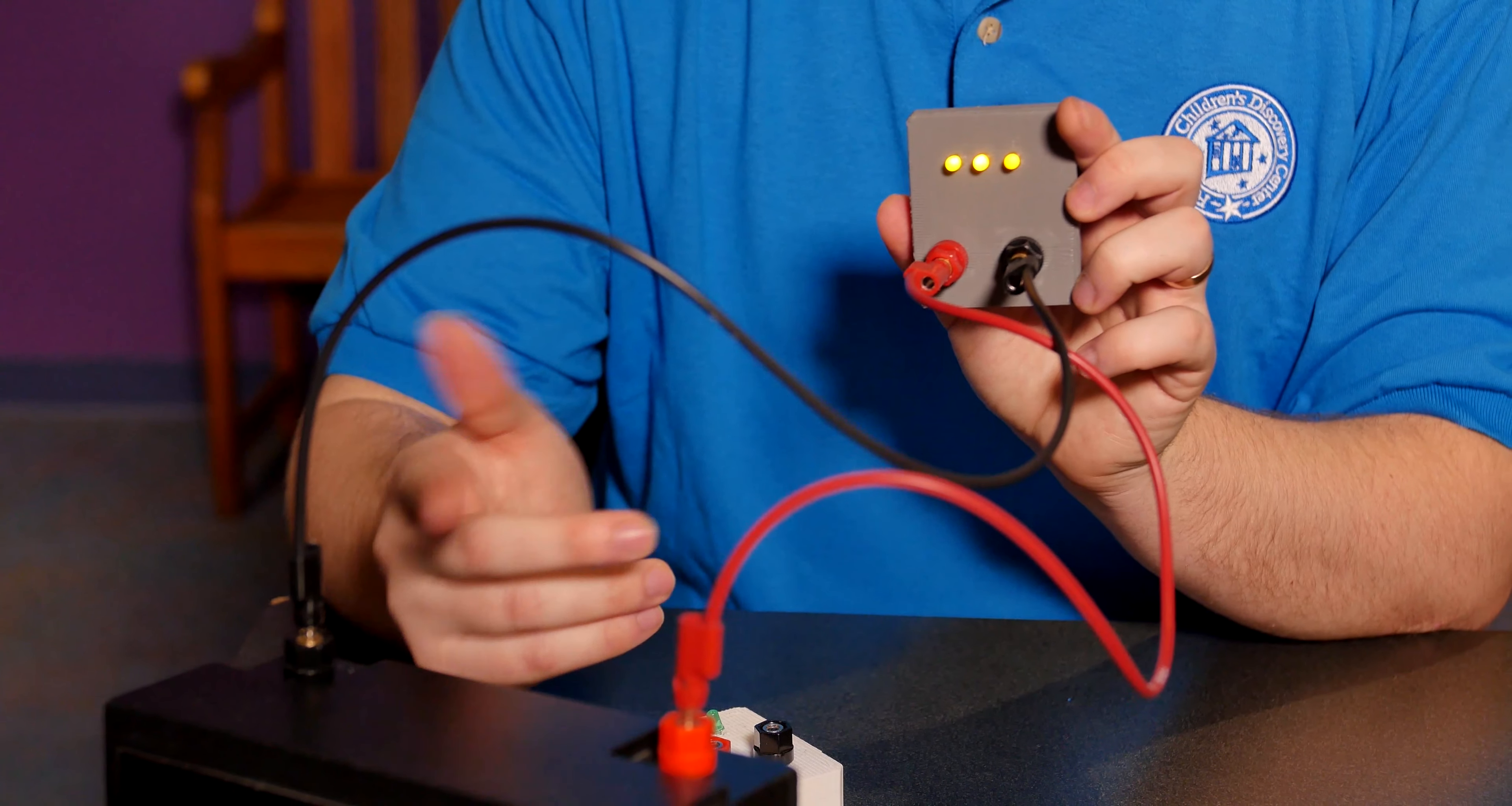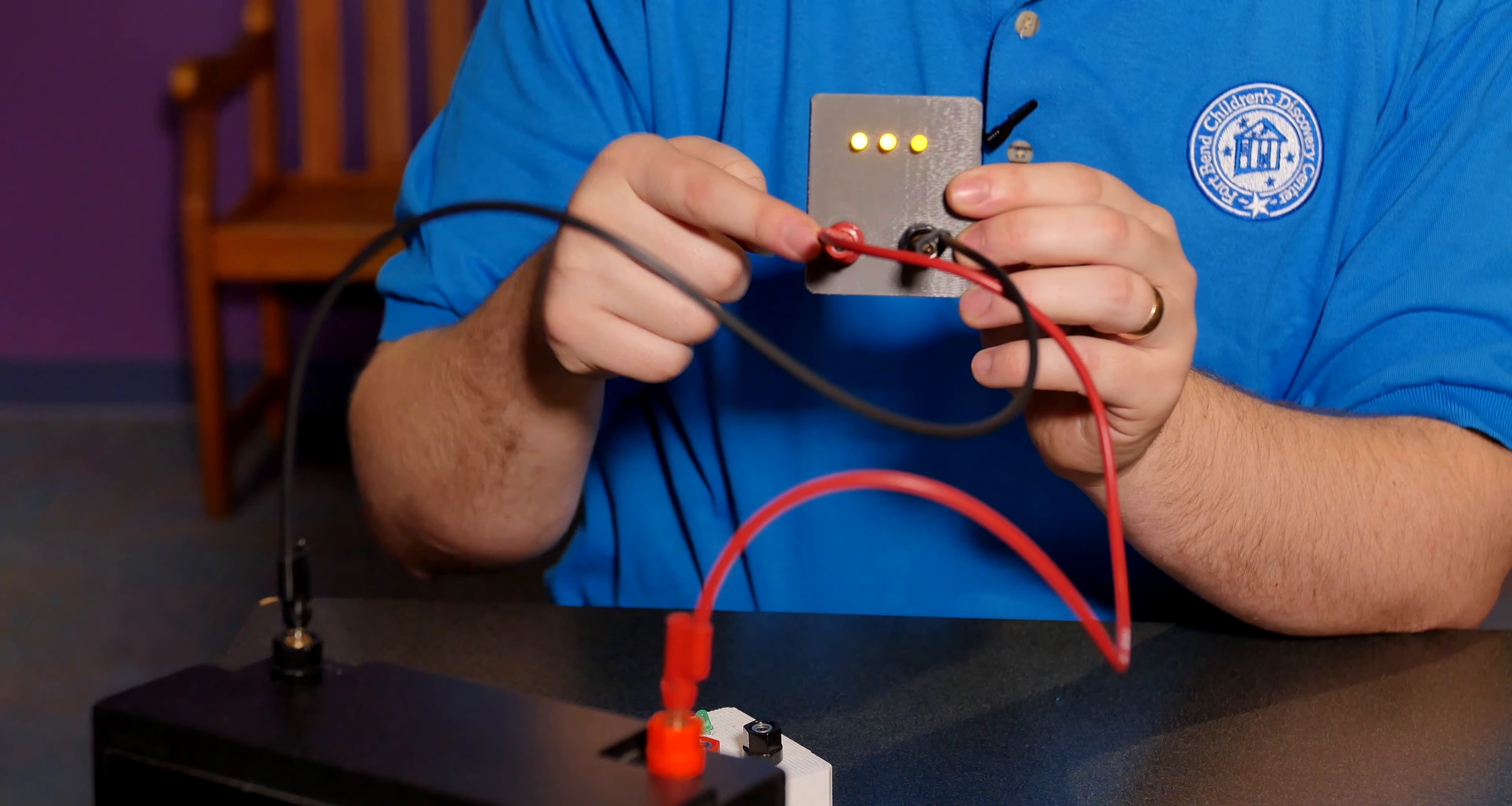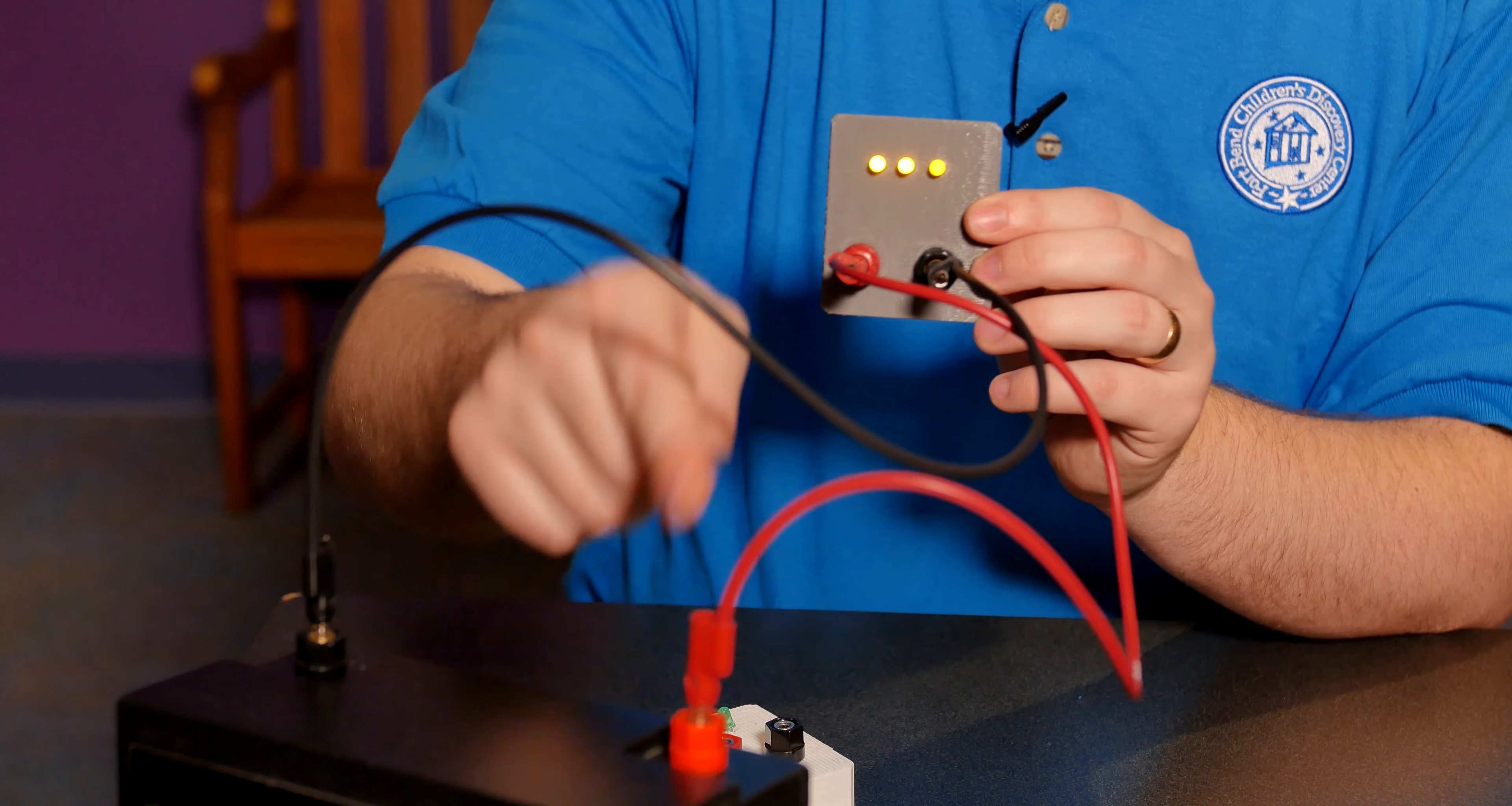All right, so the circuits, the electricity actually flows in a circle. It comes out of the positive side of the battery, which is usually red, through this wire into the positive side of the LEDs, and then out of the negative side of the LEDs and into the negative side of the battery, and then around in circles because the electrons have to move in a circle.